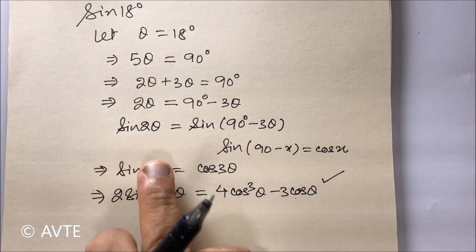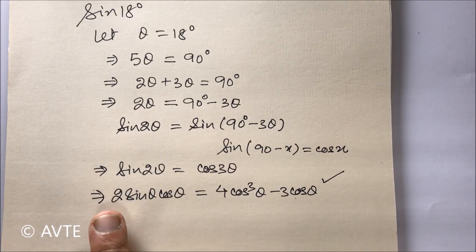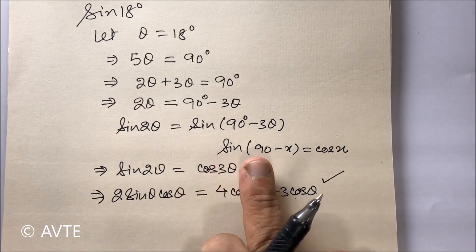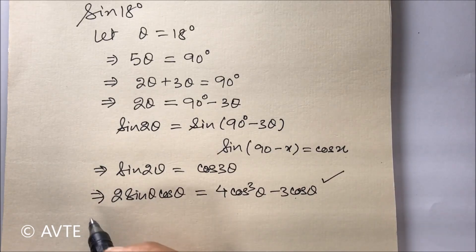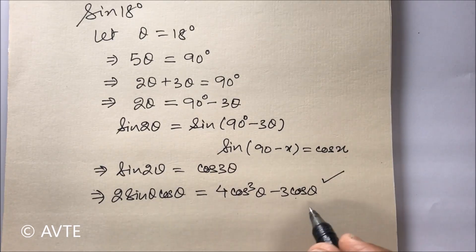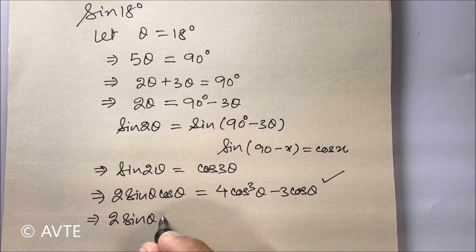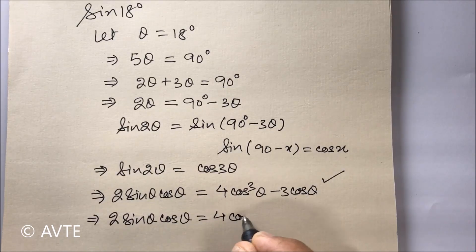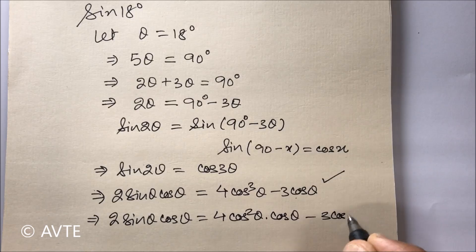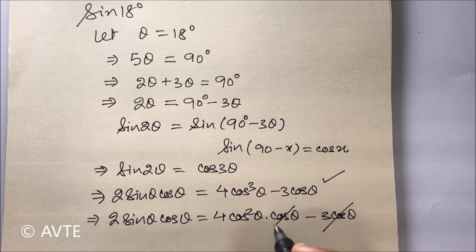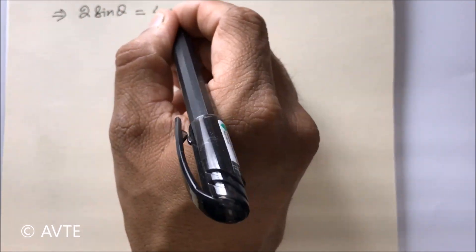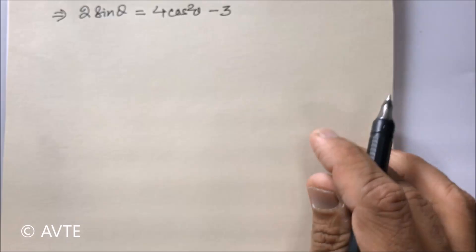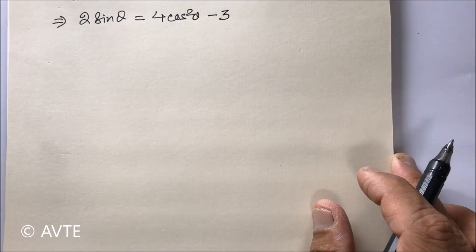We apply the double angle formula to get sine 2 theta as 2 sine theta cos theta, and the triple angle formula to expand cos 3 theta as 4 cos cubed theta minus 3 cos theta. Since the target is to find sine 18 degrees, we cancel cos theta from both sides, leaving us with 2 sine theta equals 4 cos squared theta minus 3.